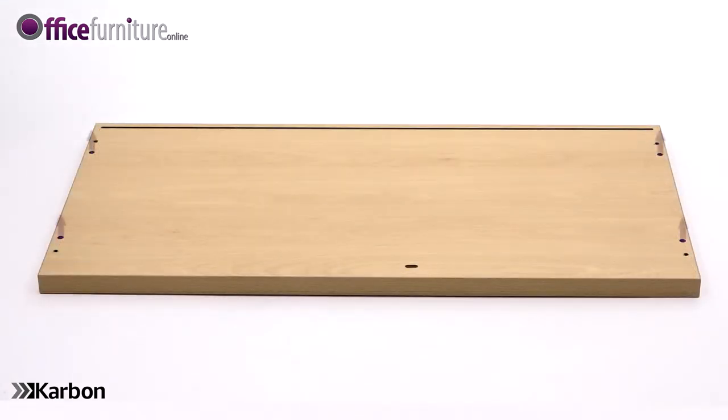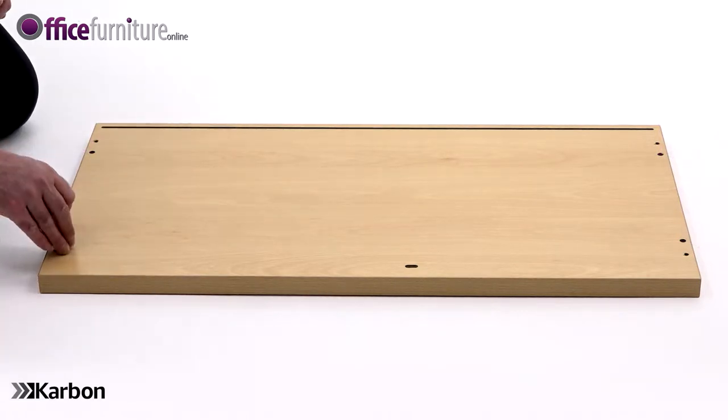Now take the top panel and again lie it on the floor with the holes facing upwards and insert 4 dowels into the inner holes of the panel as shown.